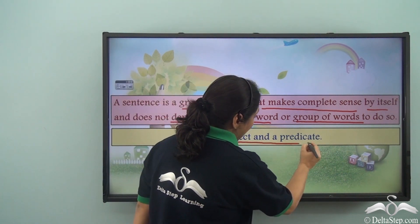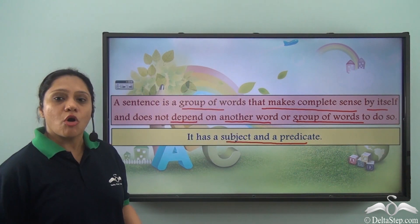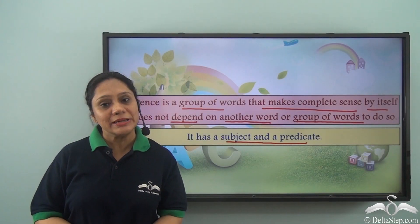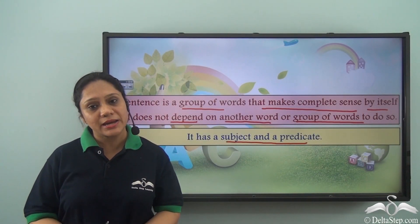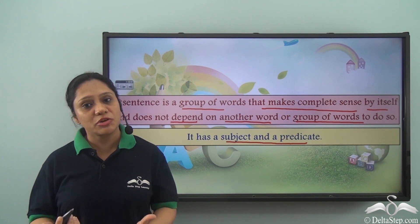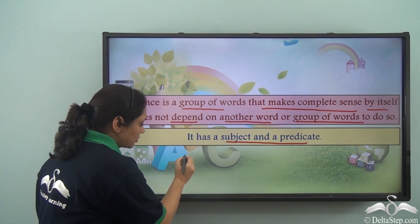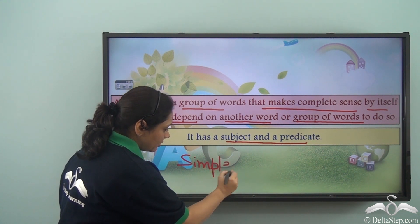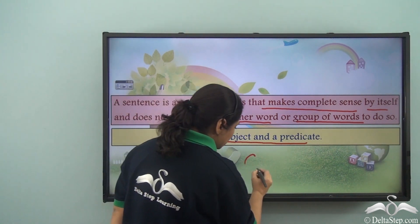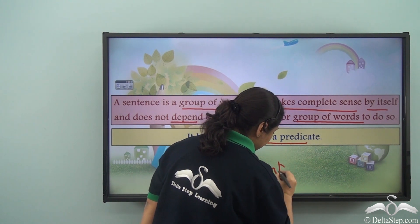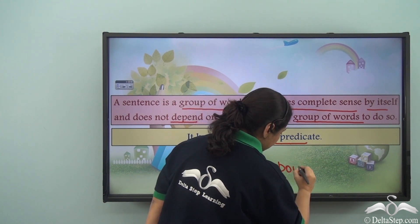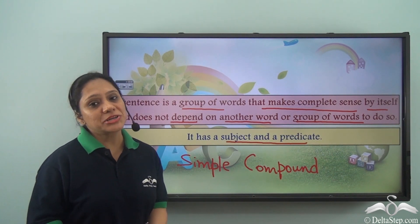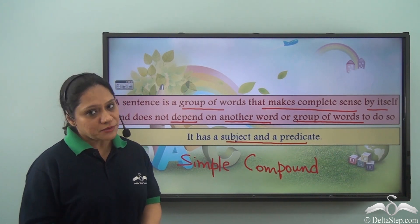We know that the predicate always contains the verb. You have already learned that there are various kinds of sentences based on structure. You have learned about the simple sentence and the compound sentence, and today we shall learn about a new kind of sentence.